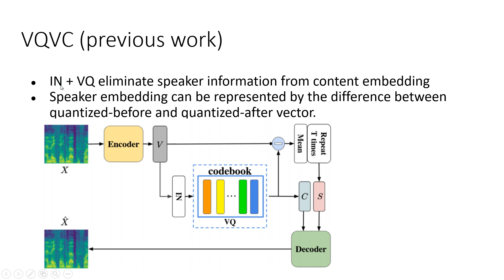In our previous work we found that instance normalization plus vector quantization can eliminate speaker information from content embedding. Second, we found that speaker embedding can be represented by the difference between context before and context after vector quantization. In details, if v is the output of the encoder, then our content embedding c is v passing through instance normalization and vector quantization. Our speaker embedding s is the difference between v and c, averaged over time.